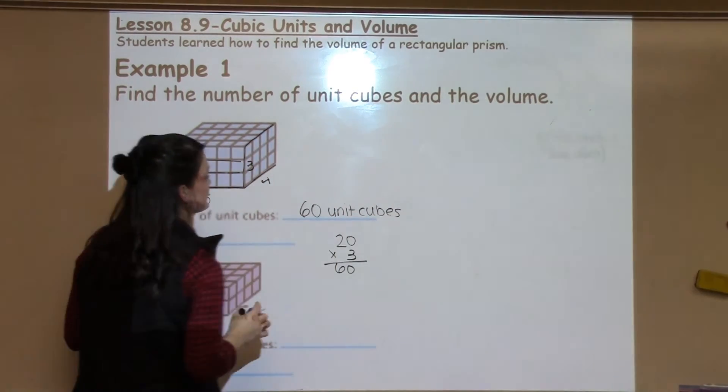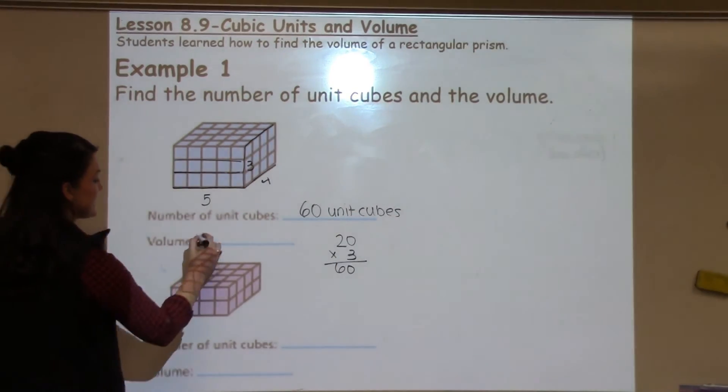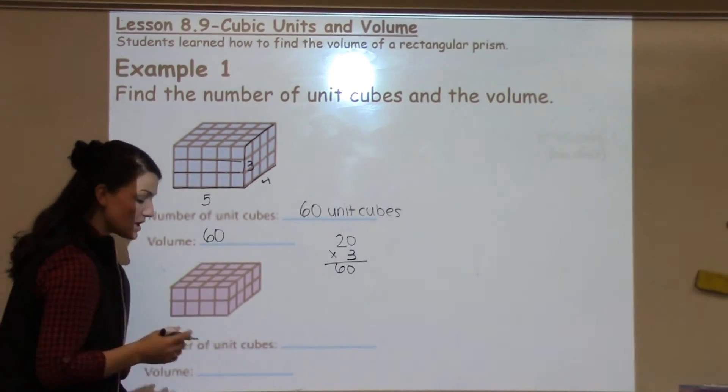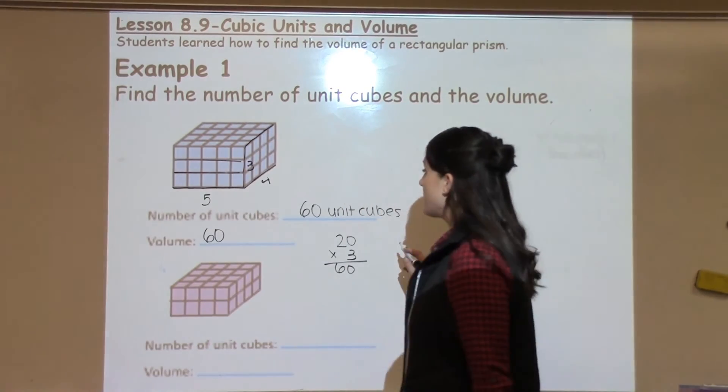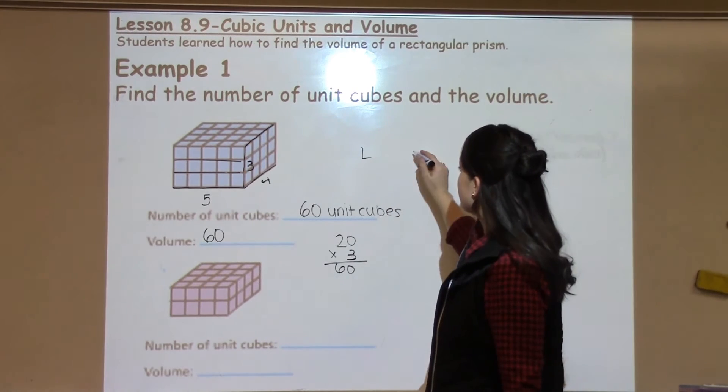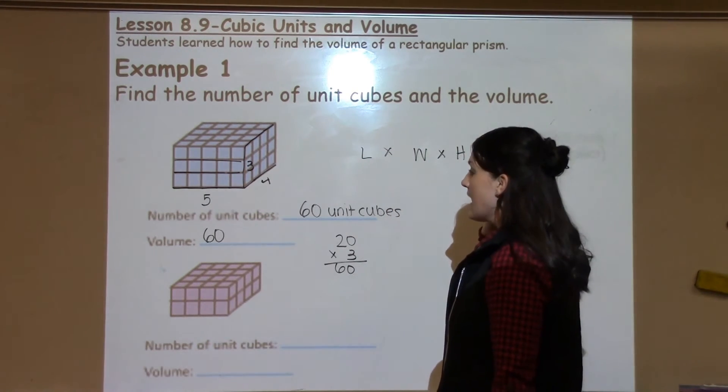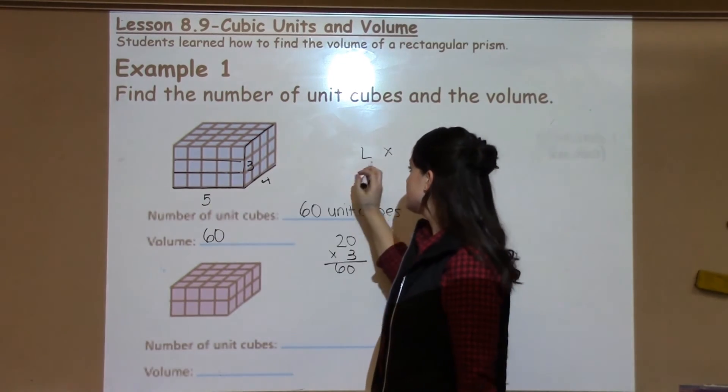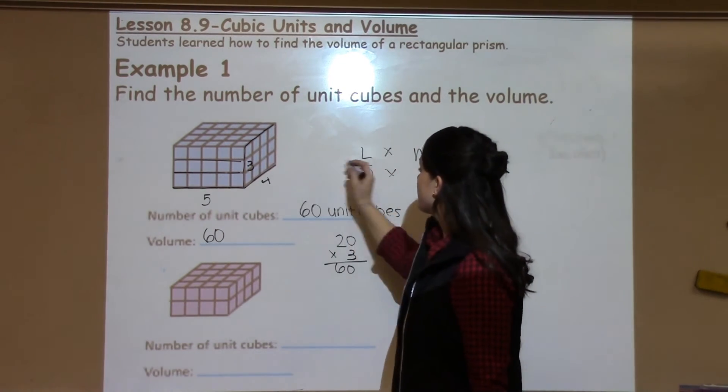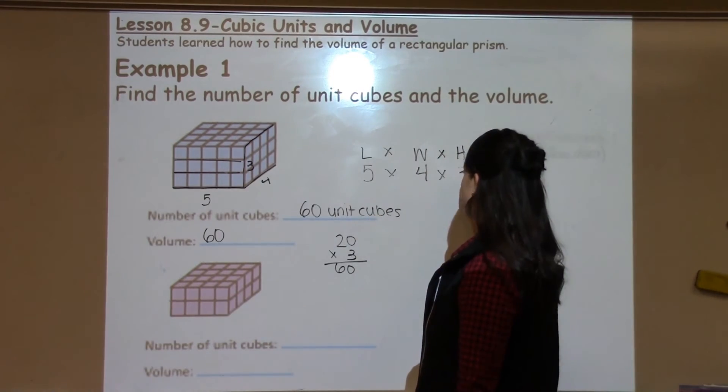Well, we also learned that the amount of unit cubes is the same as the volume because all I have to do to figure out the volume is take my length times my width times my height. And in this problem my length is 5, my width is 4, and my height is 3.